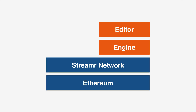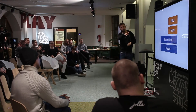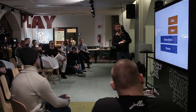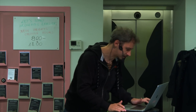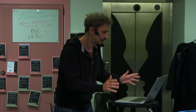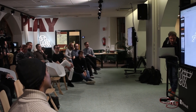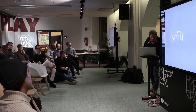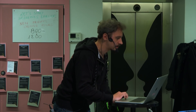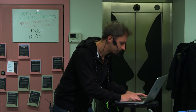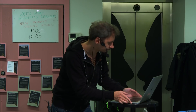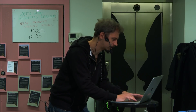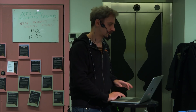You'll see how off-chain computation happens in the engine, how data travels in the Streamr network, and how we interact with an Ethereum smart contract. It's always a bit crazy to do a live demo in a presentation, but I'll take the risk. Here's the interface. I'll just zoom in a little bit. So we start with an empty canvas — we call them canvases.